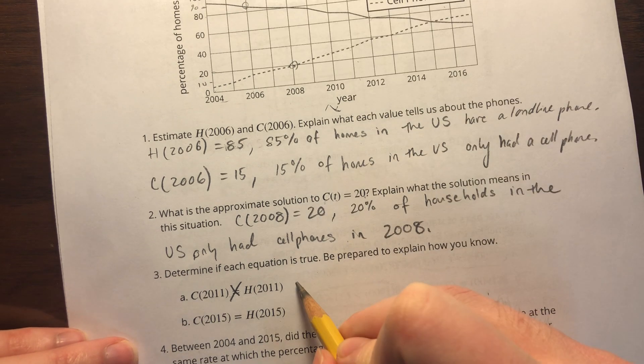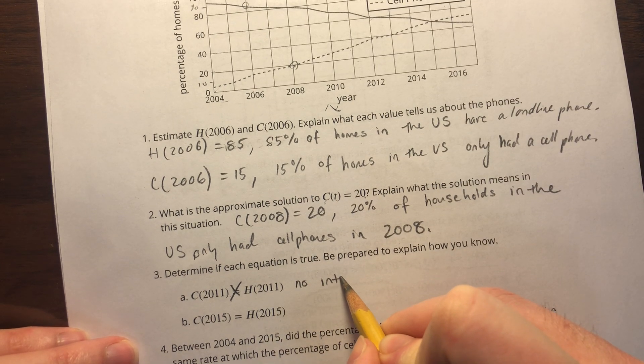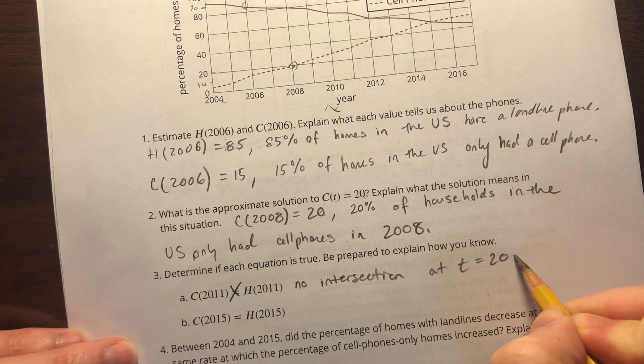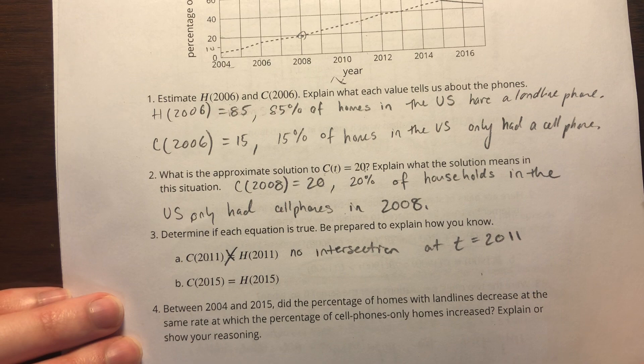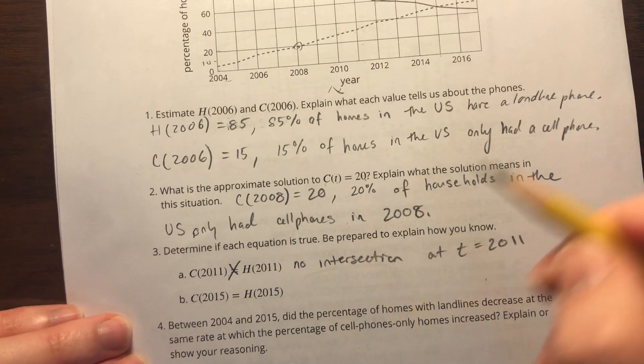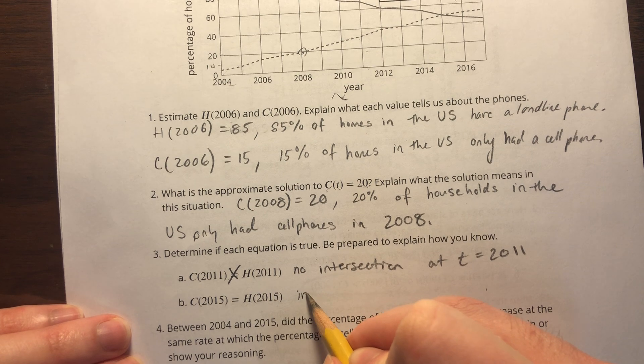Let's see if 2015 is true. That is true. There is an intersection when t = 2015.